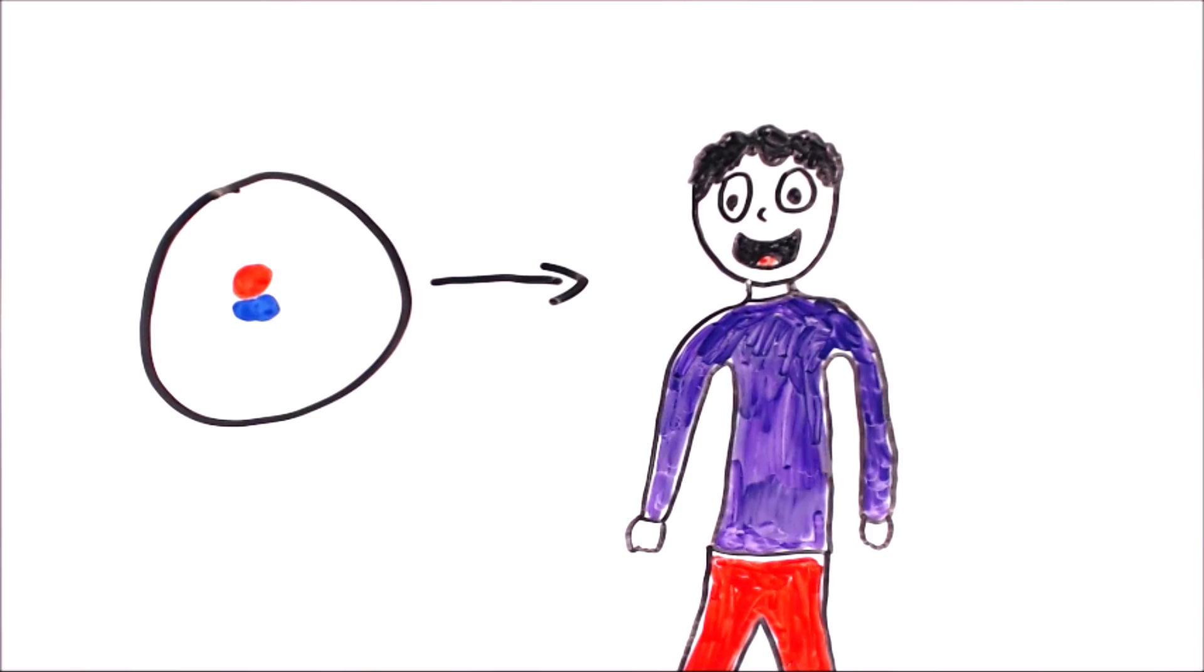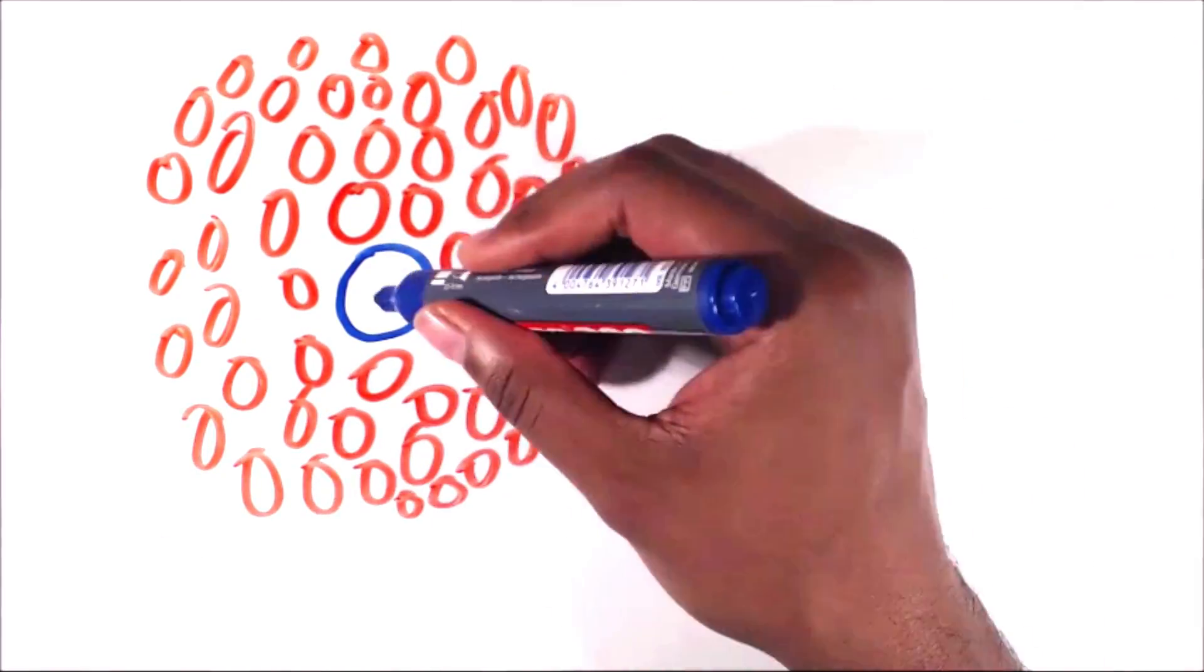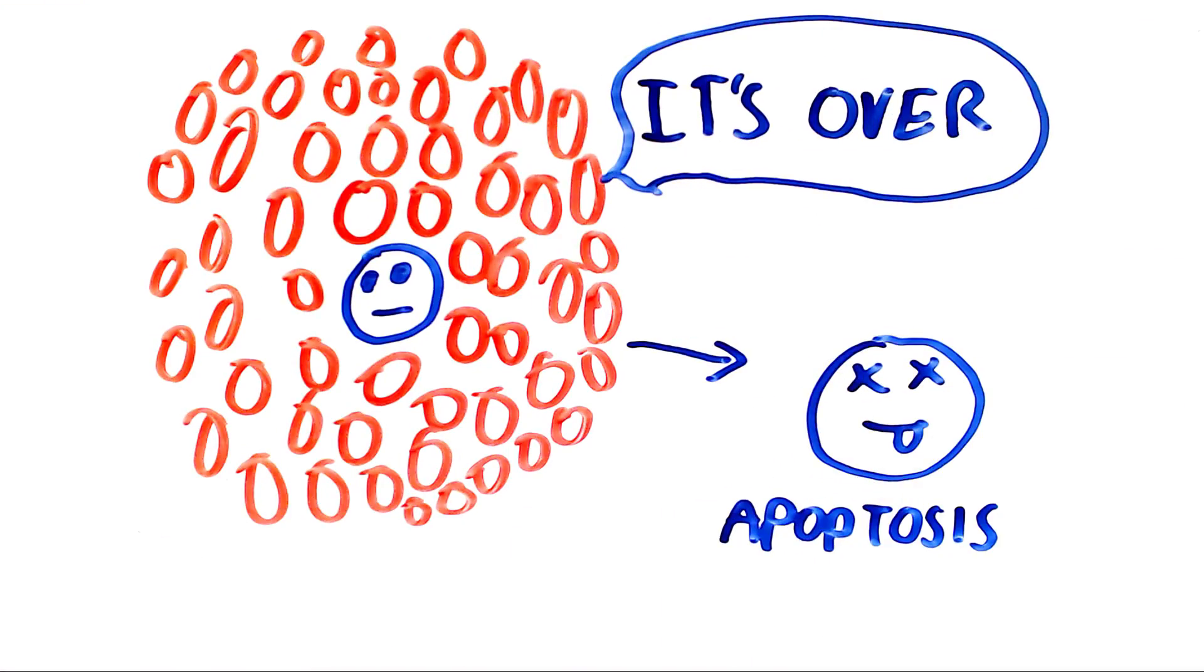Cells however do not divide infinitely. After a certain number of divisions, the cells undergo apoptosis, which is cell suicide.